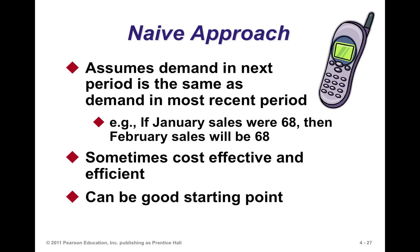The naive approach is a very simple methodology that works well if your demand pattern is stable. It basically says the next period is the same as the last period — if January sales were 68, then February sales might be 68. You can adapt it for trend: if February was 10% higher than January, assume March will be 10% higher than February. For seasonality, this January will look like last January. You can extrapolate both trend and seasonality to the naive model quite easily.